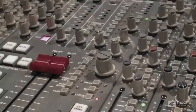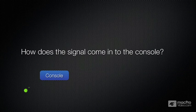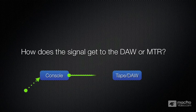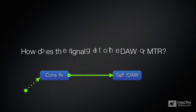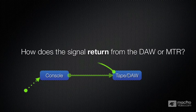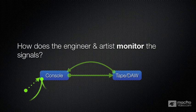The entire tutorial is structured to answer four primary questions: How does the signal come into the console? How does the signal get from the console to the DAW or multi-track recorder? How does the signal return to the console from the DAW or multi-track? And how does the engineer and artist monitor the signals passing through the console?